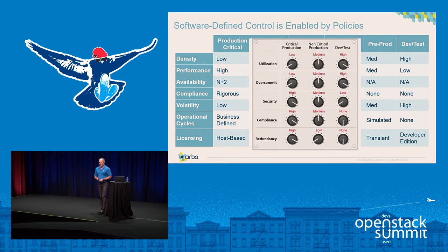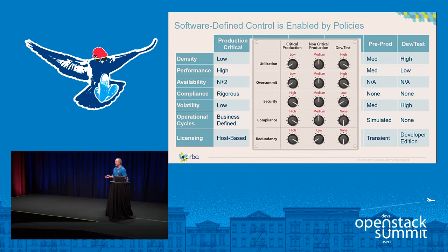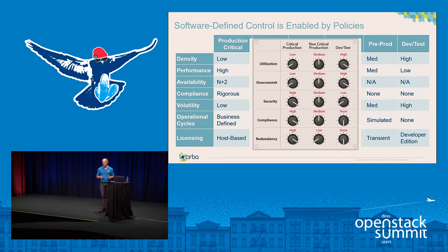What we're finding is that software-defined control of things like utilization, over-commit ratio, security compliance, and utilization levels — if you can control that using a policy — you're going to have a much more governed environment, especially when you take all these different parameters and environments into consideration.